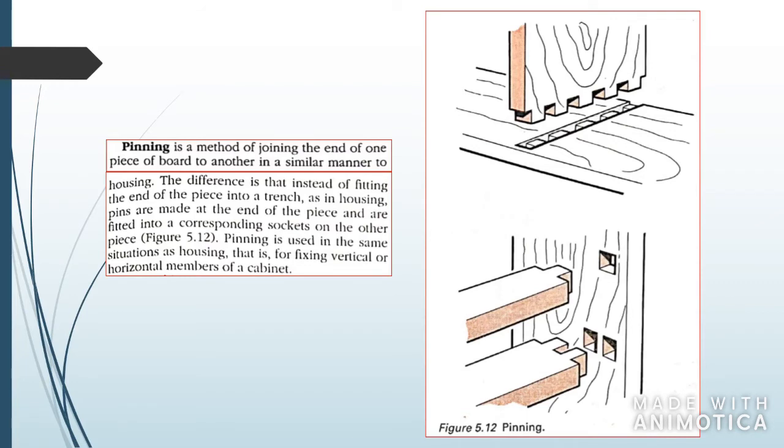Pinning is a method of joining the end of one piece of wood to another, similar to housing as we learned in part one. However, you're actually pinning both woods together so they're not released easily. Instead of fitting the end of the piece into a trench, the pins are made at the end of the piece and fitted into corresponding sockets like a puzzle.